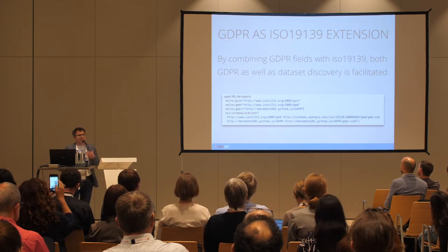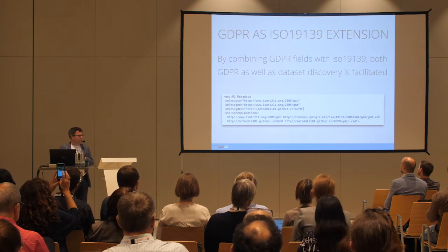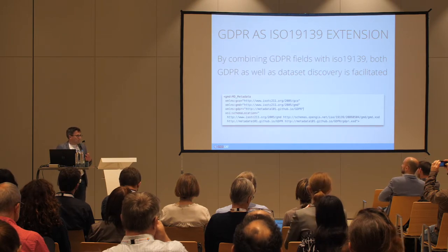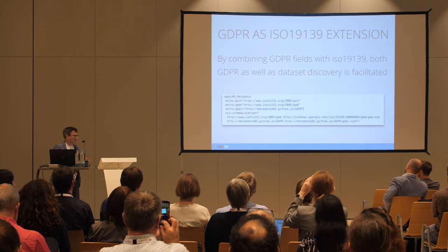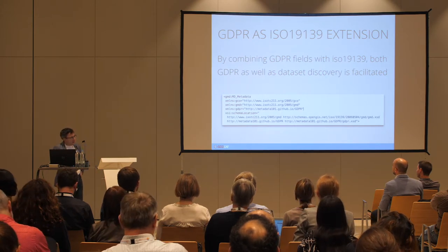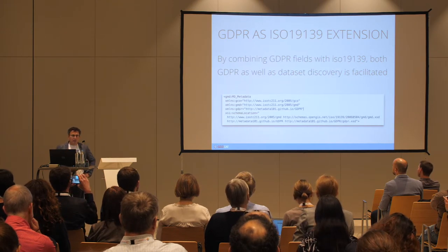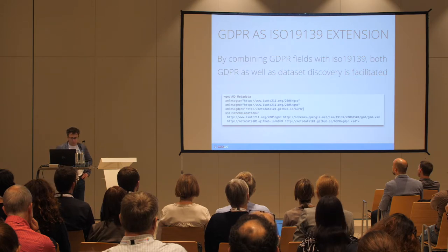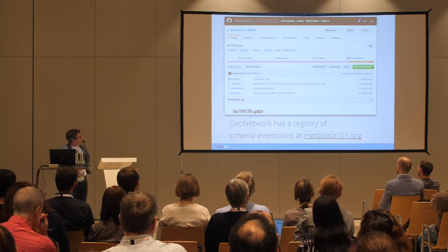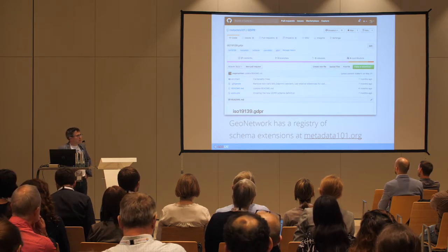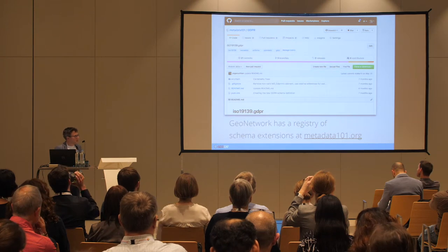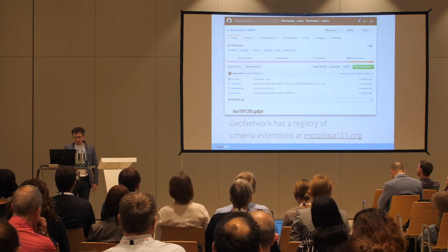How did we do that? At first, we tried to squeeze all the GDPR fields into the ISO 19139 schema, but that didn't work out — there were too many things to accommodate. So what we ended up with was a new schema extension added in the content info section, which is GDPR content info. This schema is registered in the metadata 101 schema register of GeoNetwork, making it free to use for anybody.